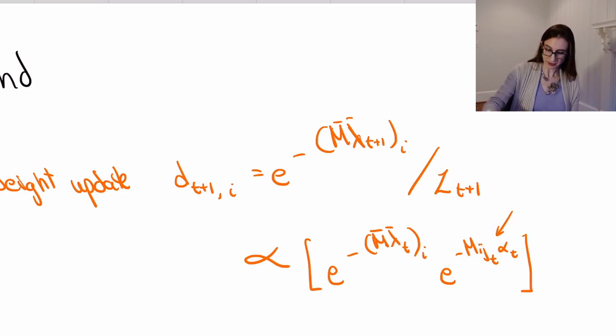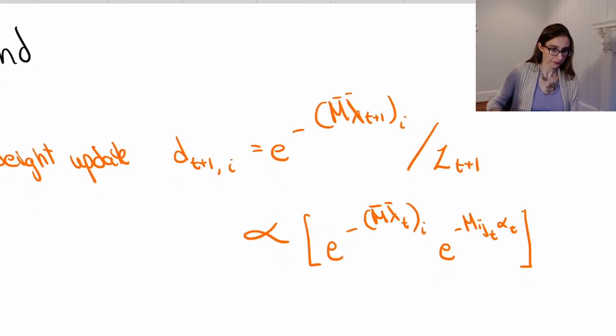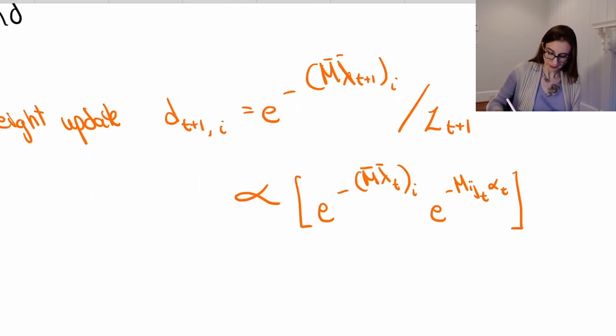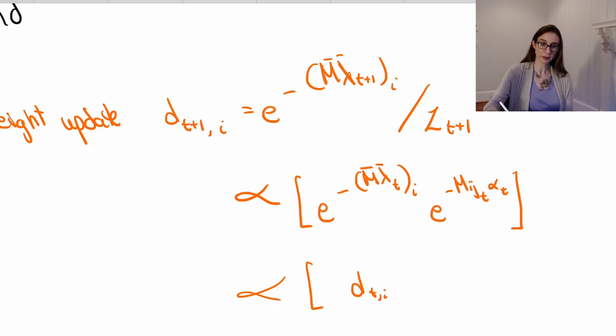This thing is proportional to dt,i. In fact, this is exactly the unnormalized version of dt,i, and then I get to copy what I had in before: m i jt alpha t.